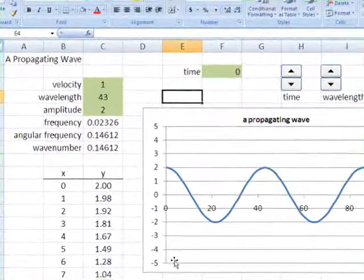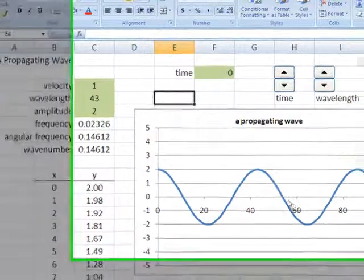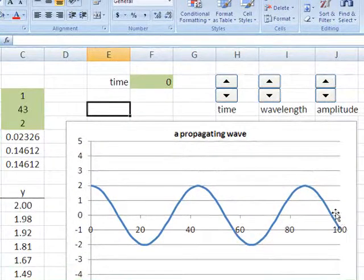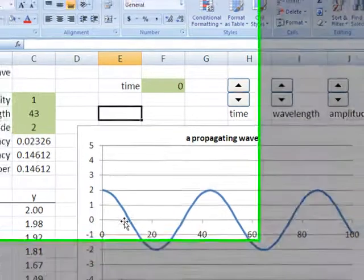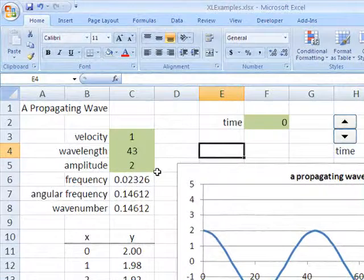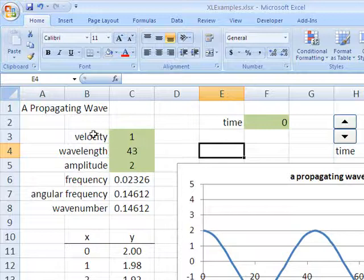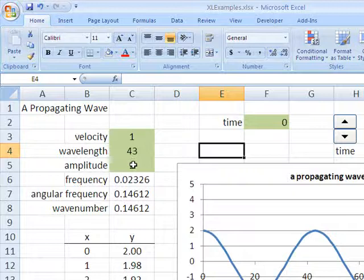In this spreadsheet we're graphing a propagating wave like a sine wave, so we're using our trig functions here to make this graph. You can see some properties of the wave: velocity, wavelength, amplitude. Notice that I have highlighted those in green - those are input data.